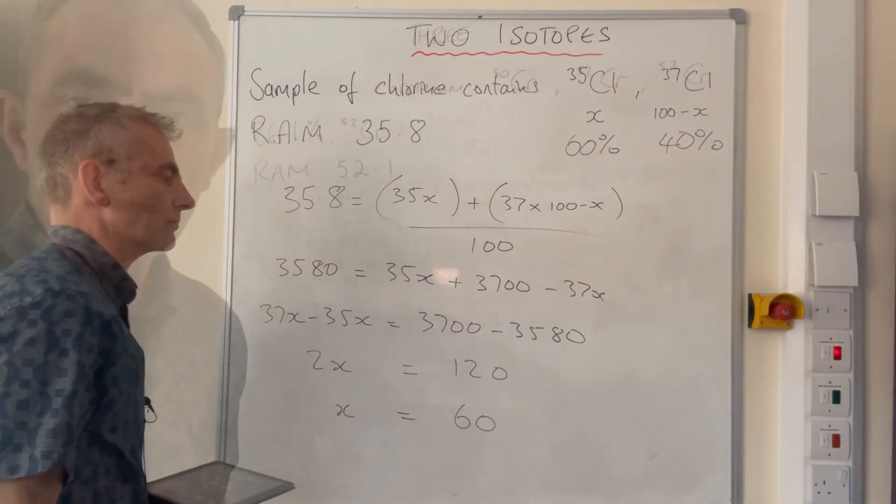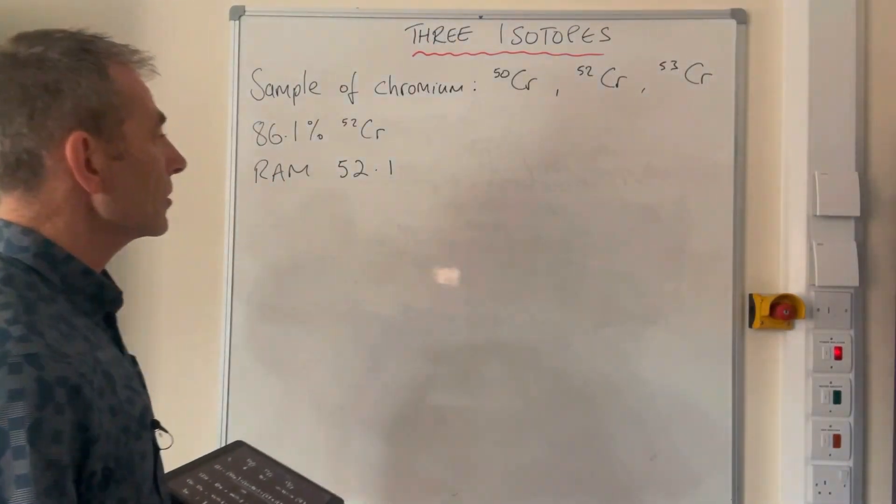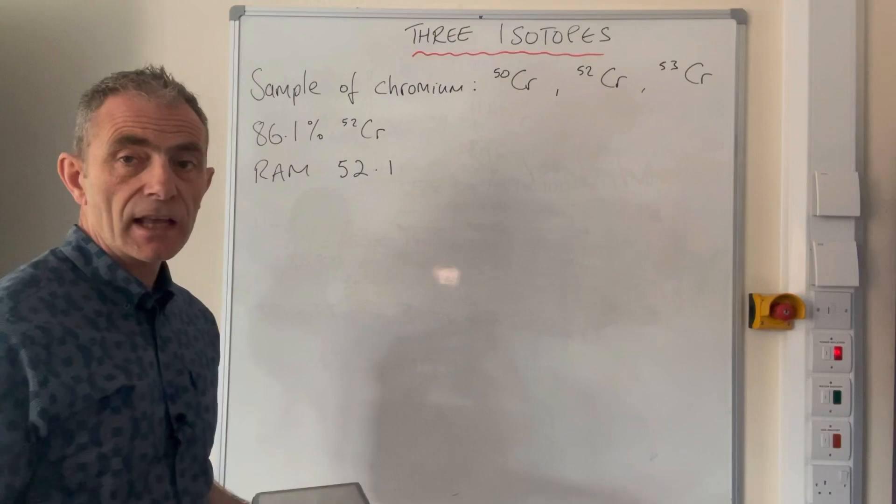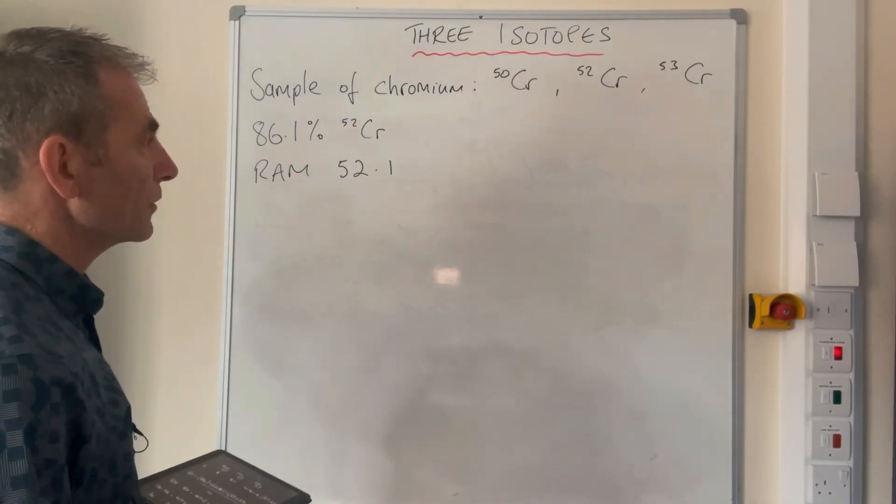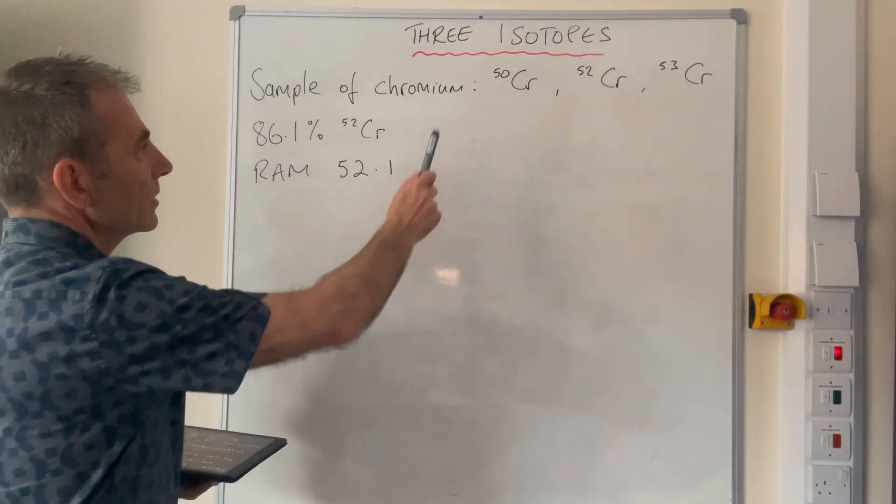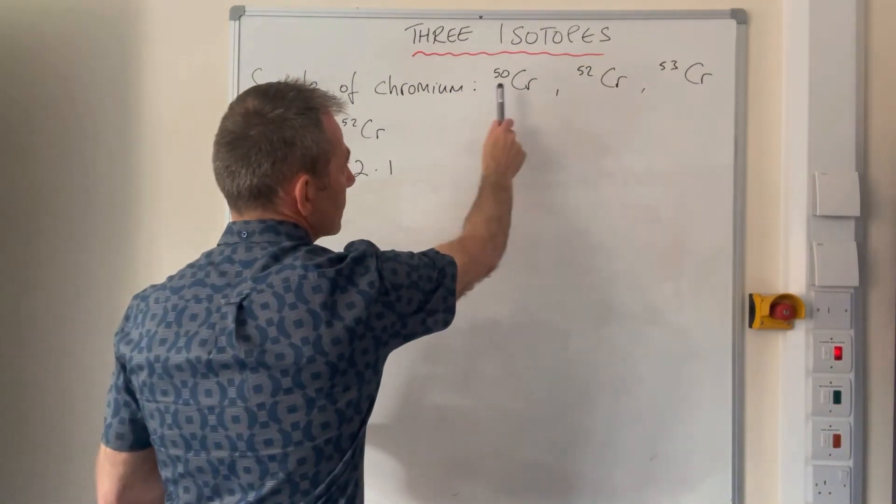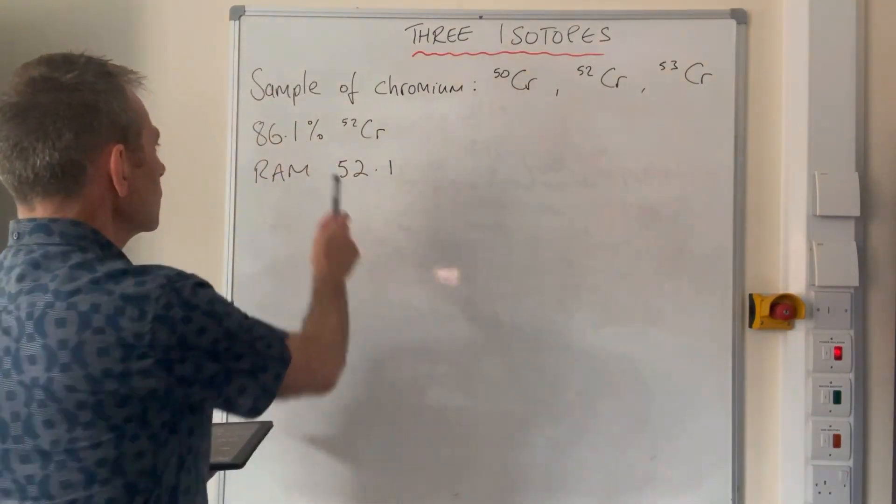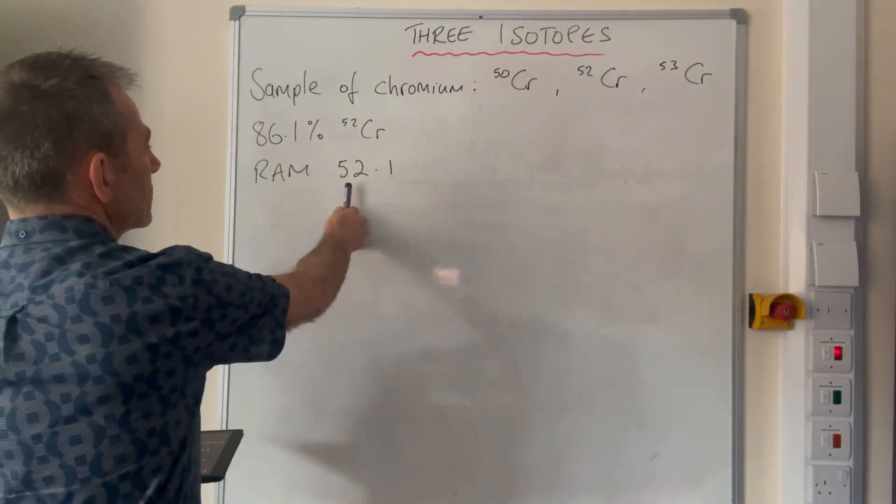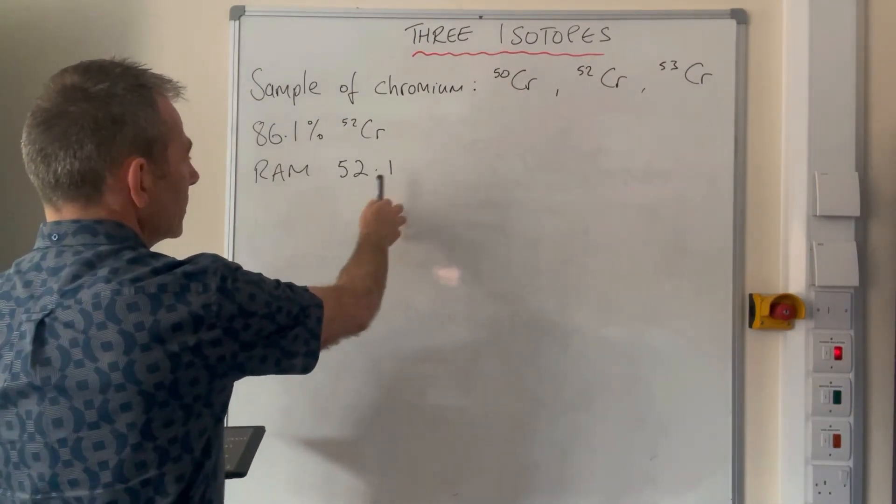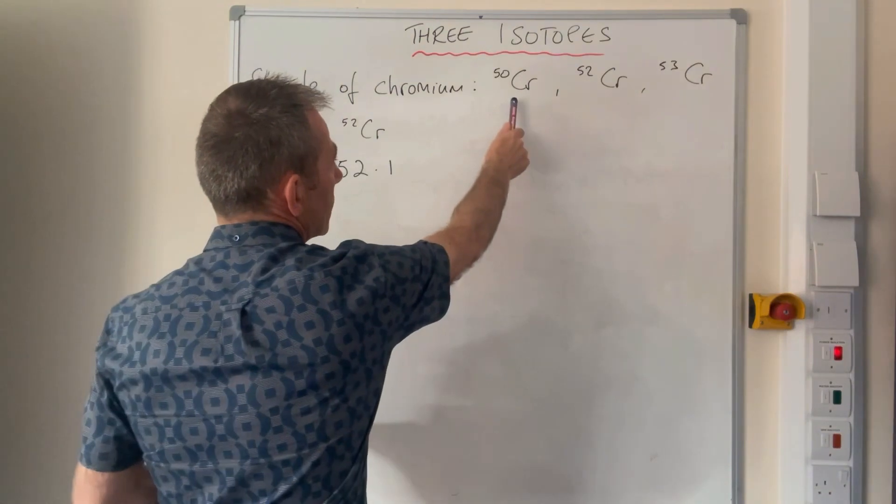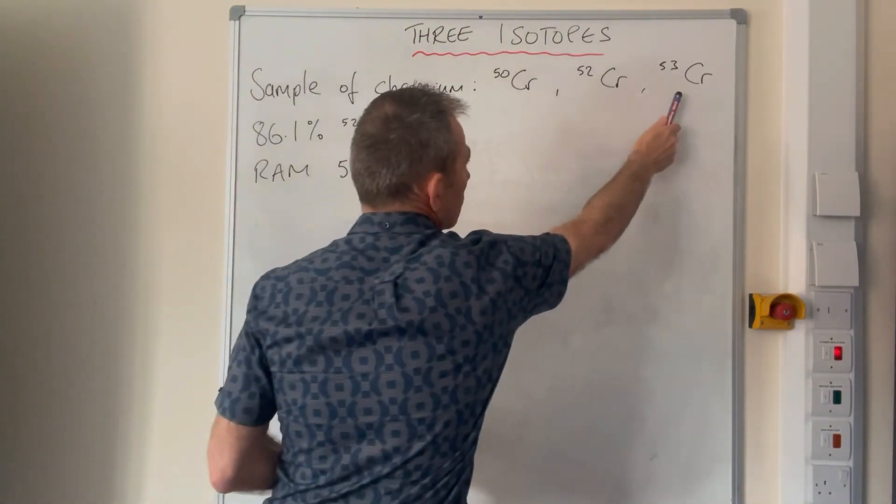We'll move on to a more complicated one, so we've got 3 isotopes now. I actually got this question from an AQA A-level paper, it was worth 4 marks, so it's the kind of question that you could be asked. So we've got a sample of chromium, and it's got these 3 isotopes: 50, 52, 53. We're told that the chromium-52 isotope is 86.1% abundant, and the relative atomic mass of the sample is 52.1, so we've obviously got to calculate the percentage abundance for the chromium-50 and the chromium-53.